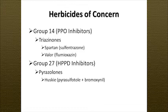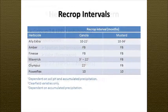Some other herbicide groups that cause problems are the triazinones, or group 14 PPO inhibitors—Spartan and Valor can both be used in legume and pulse crops and can carry over. Then there's group 27, the HPPD inhibitors—the pyrazolinones. Husky is one of these and has about a nine-month rotation restriction, so it's not real long. But the group 2 herbicides are by far the most widely used and the most concerning, with the longest rotation restrictions.